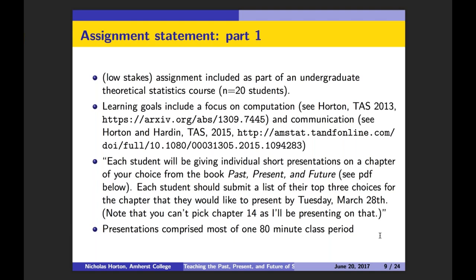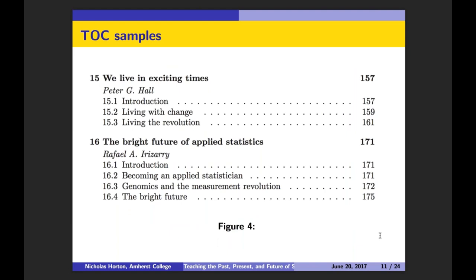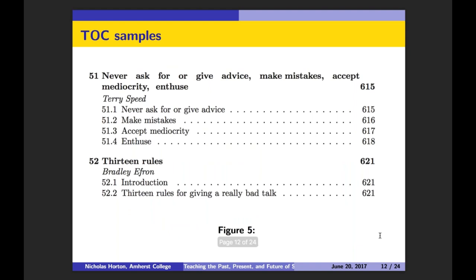To give you a sense of how the book looked from the student perspective, they were scanning the table of contents. They saw chapter 12 on promoting equity, Steve Feinberg on statistics and service to the nation, Peter Hall talking about living in exciting times, and Rafa on the bright future of applied statistics. There was great advice, like Terry Speed's 'never ask for or give advice, make mistakes, expect mediocrity,' and '13 rules for giving a really bad talk' by Brad Efron, kind of closing out the book. So the students had their choice of 51 chapters to present.